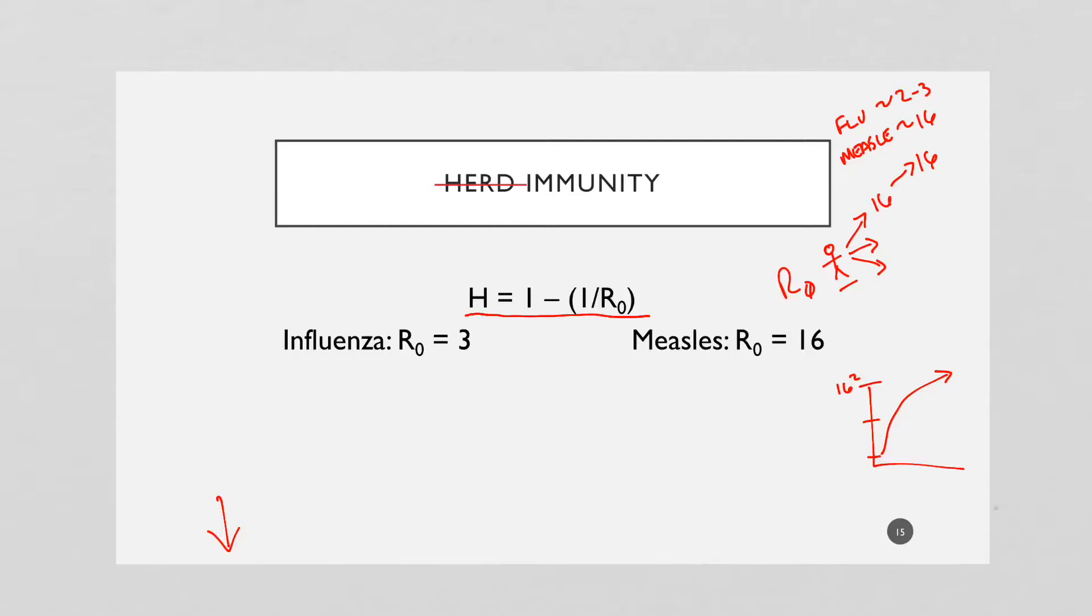Let's do some math. For influenza, let's say R0 is 3. So herd immunity kicks in at 1 minus 1 divided by 3, which is around 66%. So 66% of the population needs to be immune for herd immunity to kick in against influenza. That means if we vaccinate or people become sick at 66%, then the chances of an outbreak are very low.